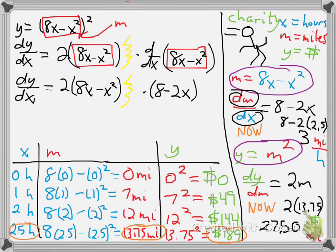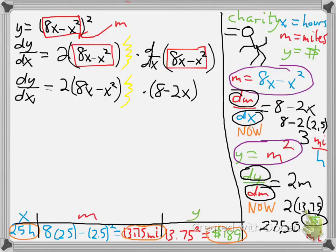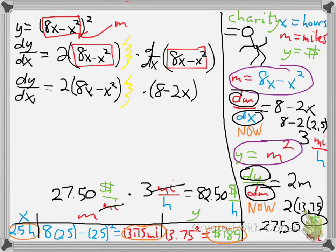I'm going to clear some space by cutting out most of the table. So to figure out the dollars per hour, we need to use both derivatives that we found. We found $27.50 per mile, and we're going at 3 miles per hour. If you multiply those together, the miles cancel, and you get our answer: $82.50. That's in dollars per hour.